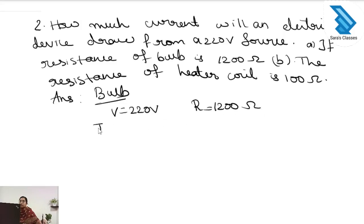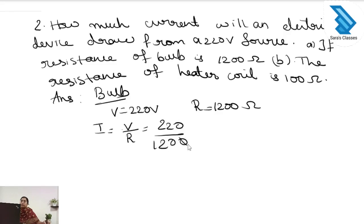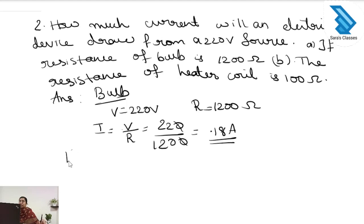To find the current, the equation is I is equal to V divided by R. So it is 220 divided by 1200. After simplification, the answer is 0.18 ampere.